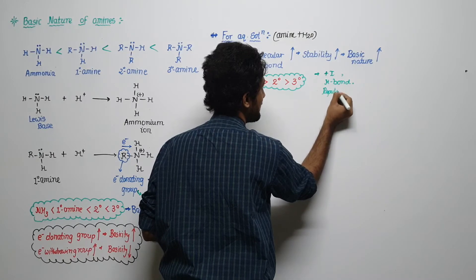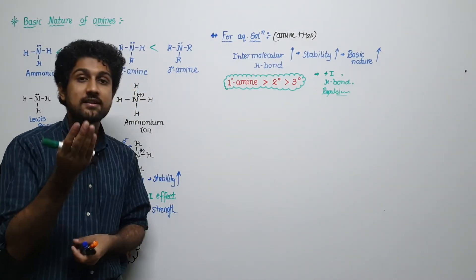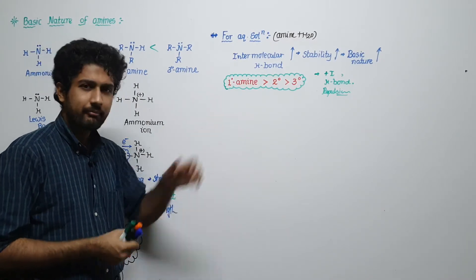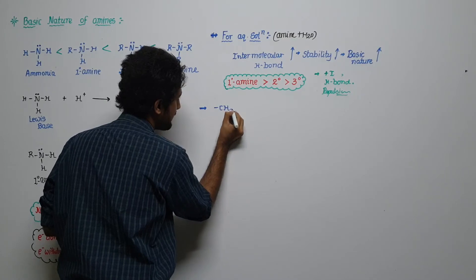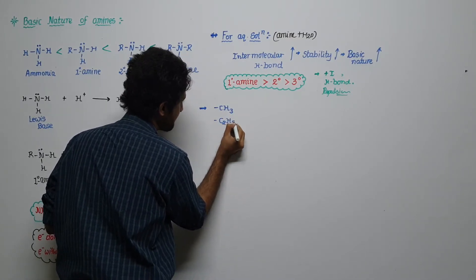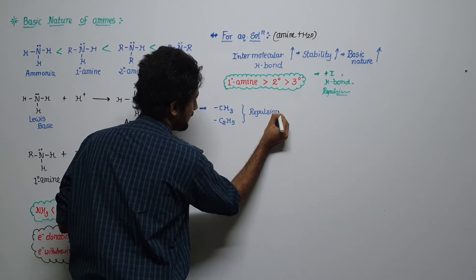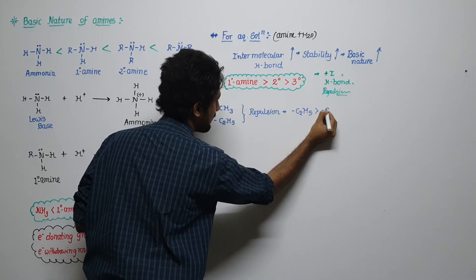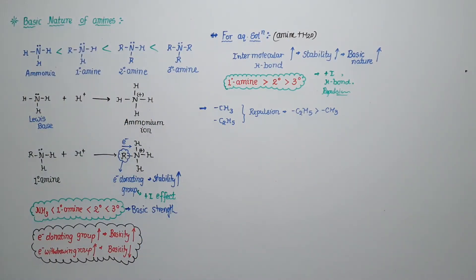Repulsion is also an important topic — due to repulsion, stability decreases if large groups are present. As an example, let's take methyl group and ethyl group. If we look at repulsion in both, C2H5 will have more repulsion because ethyl is larger than methyl. Due to this, the variation in stability between the two is quite different.